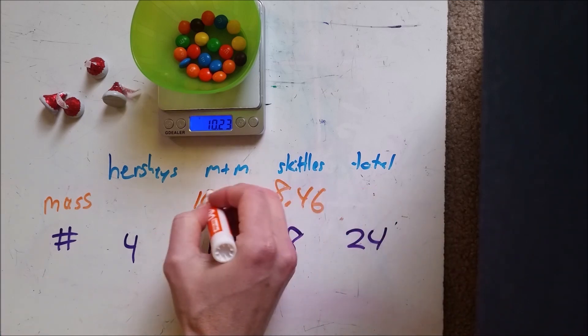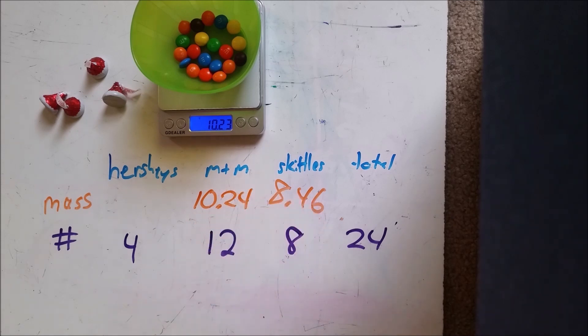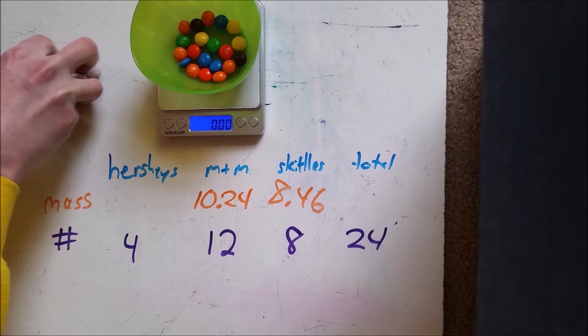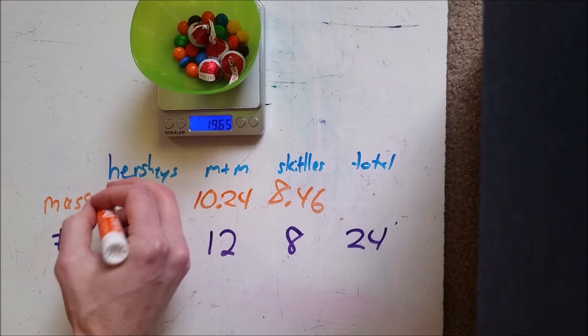And that was 10 point—I'll round this up just for matching my earlier data—10.24. We're going to add our four Hershey's Kisses and 19.65.